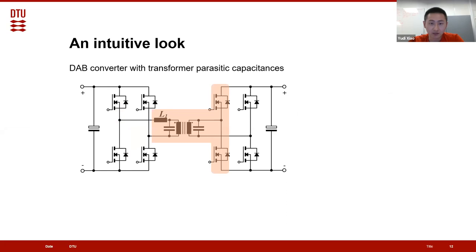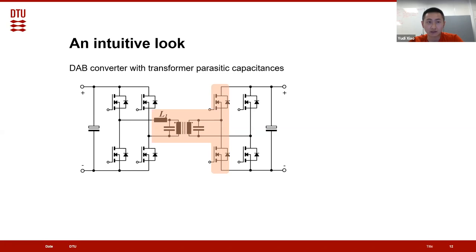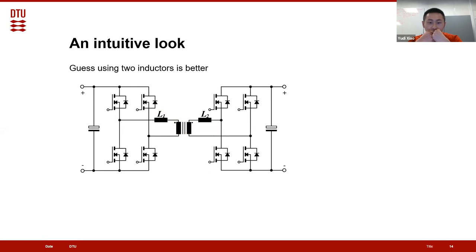But if we start to take the parasitic capacitance of the transformer into account and look at zero voltage switching of one half bridge, we can see that the inductor is not directly connected to the joint of the output capacitors — part of the inductive current is bypassed by the parasitic capacitance, meaning less current is available to charge or discharge those capacitors. The two half bridges on the left still have the inductor directly connected to their switching nodes, so we have some kind of an imbalance. This gives us the initial idea: maybe it is better to use two inductors and split the inductance, so all four half bridges have an inductive element directly connected to their switching nodes.